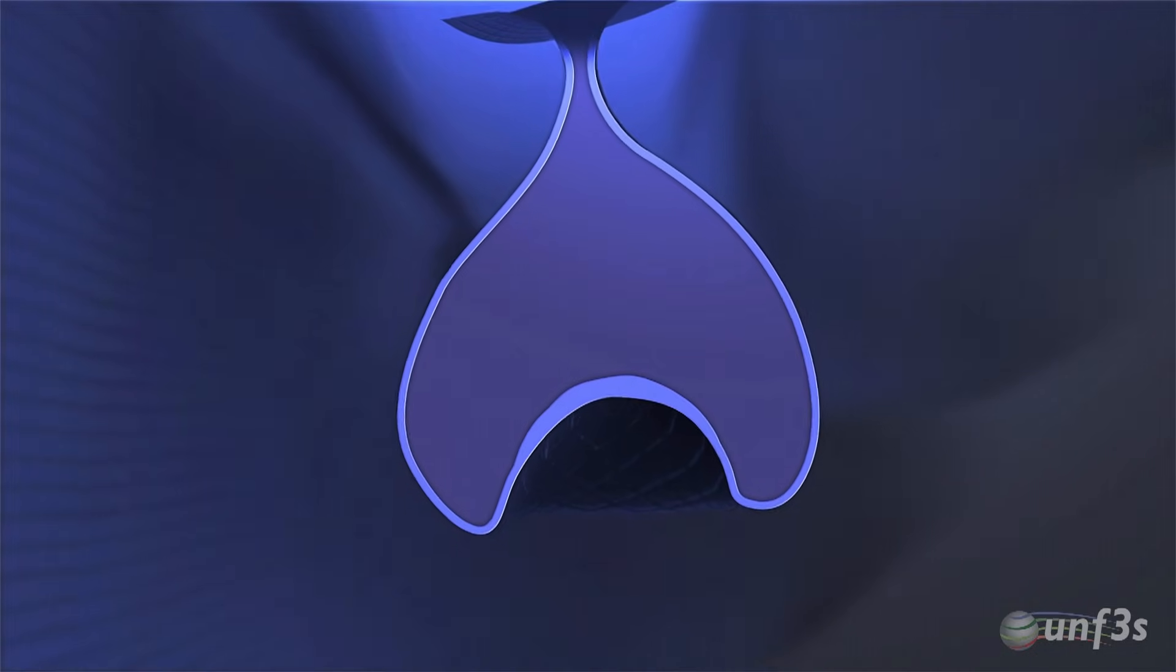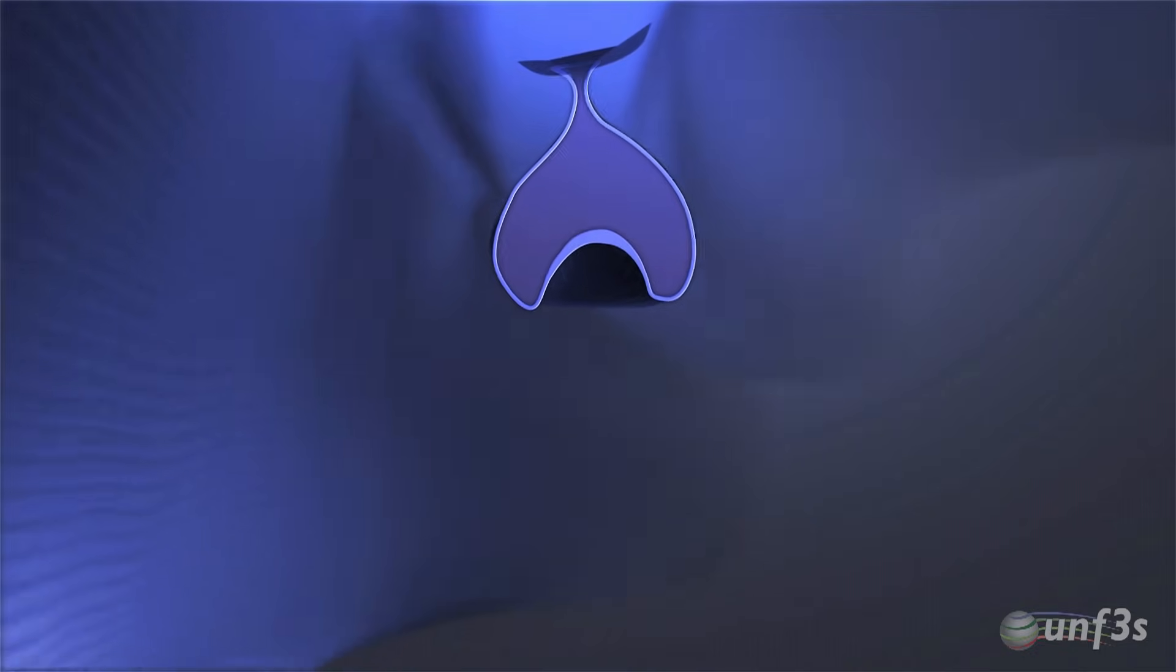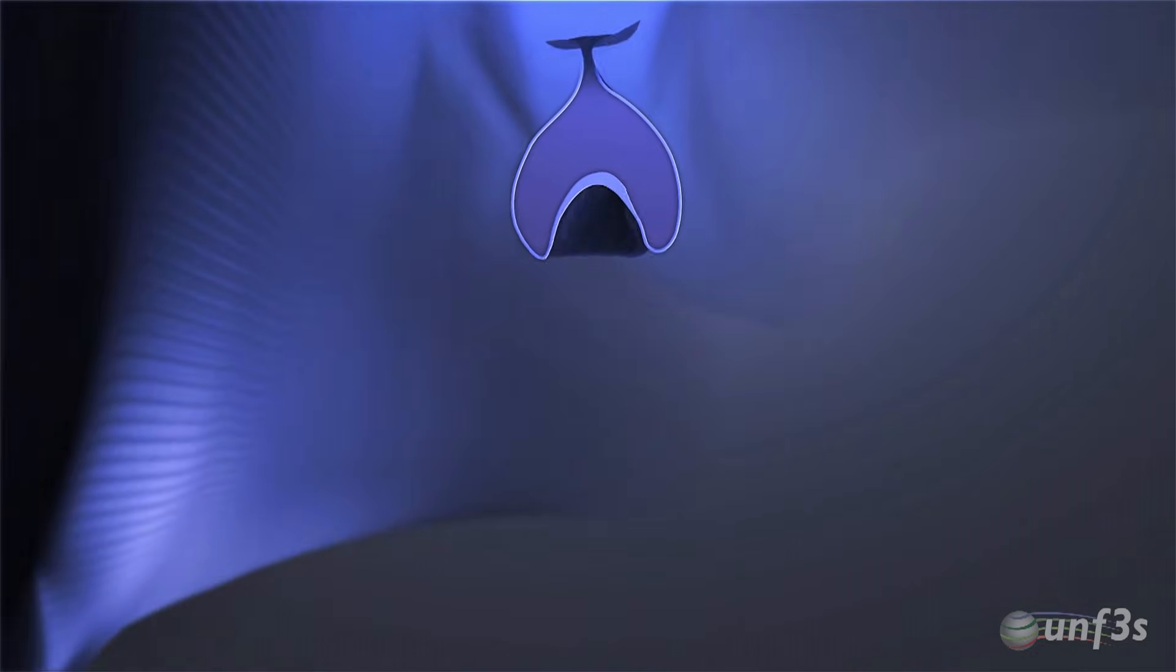After this, we reach the bell stage. The tooth germ increases in volume and expands while creating the future enamel dentin junction.